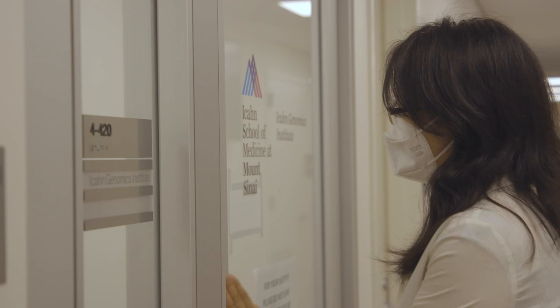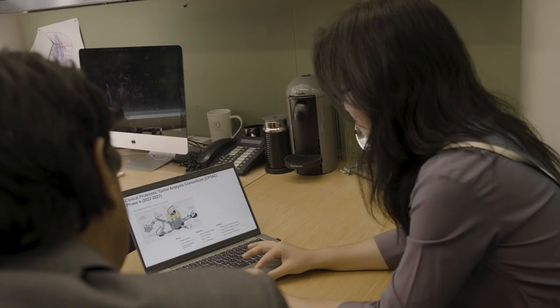My name is Pei Wang. I'm a professor of genetics and genomic sciences at Icahn School. My research has been focusing on cancer genomics.